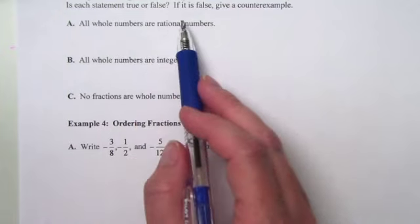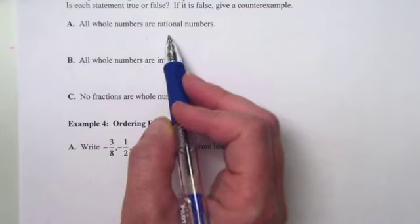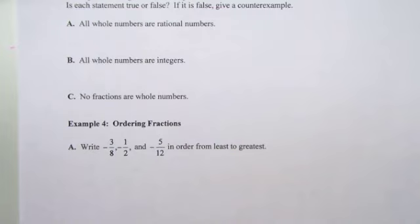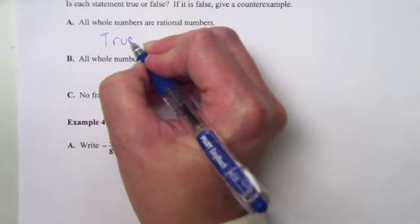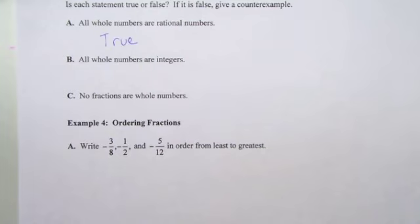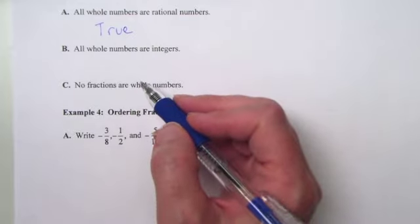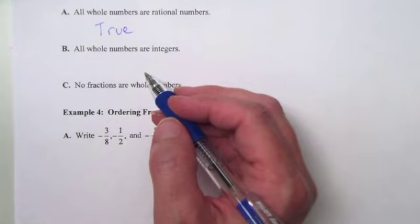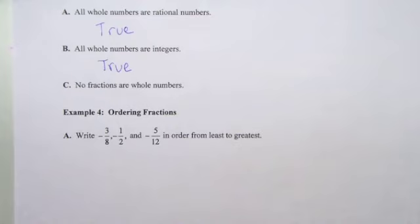Is each statement true or false? If false, give a counterexample. Our first statement: all whole numbers are rational numbers. Look at your Venn diagram — is the whole number circle included within the rational number circle? Yes, it is, so this one is true. Next: are all whole numbers integers? Look at the whole number circle — is it included within the integer circle? Again, true, because that whole number circle is included within the integer circle.